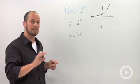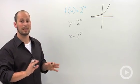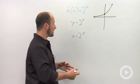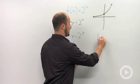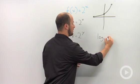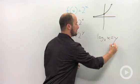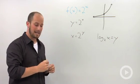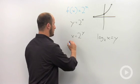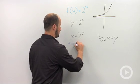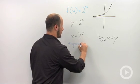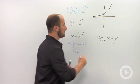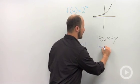What has been done is we have introduced a new function altogether — a logarithm function. How that works is: log base 2 of x is equal to y. These two statements are exactly the same. This is called exponential form, and this one over here is logarithmic form.